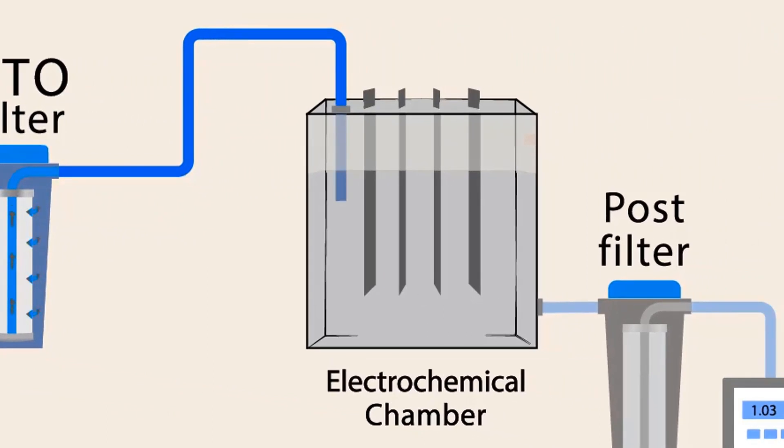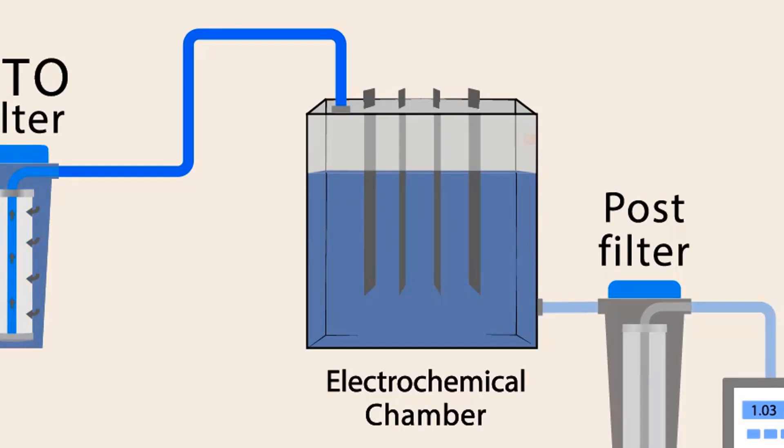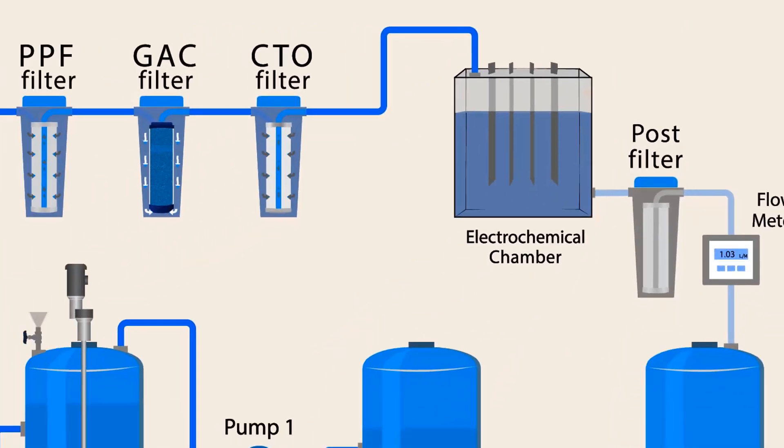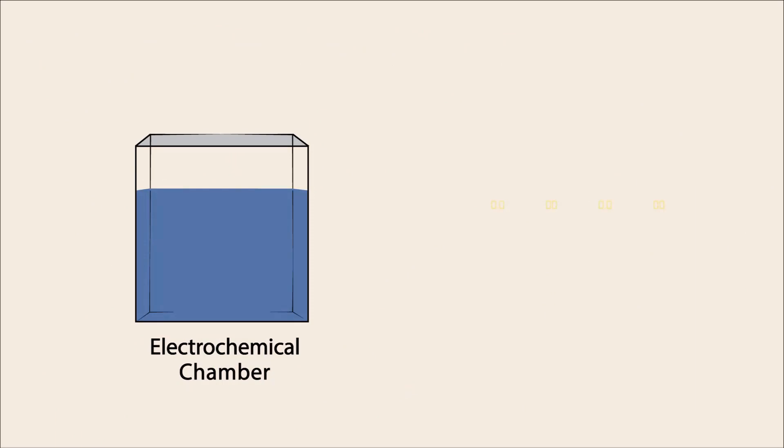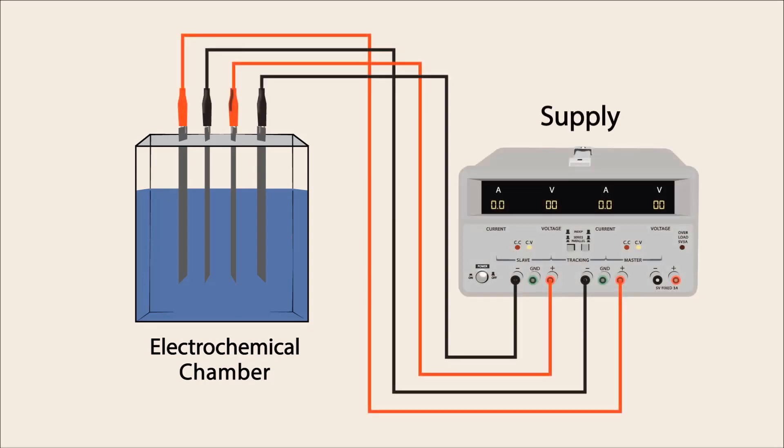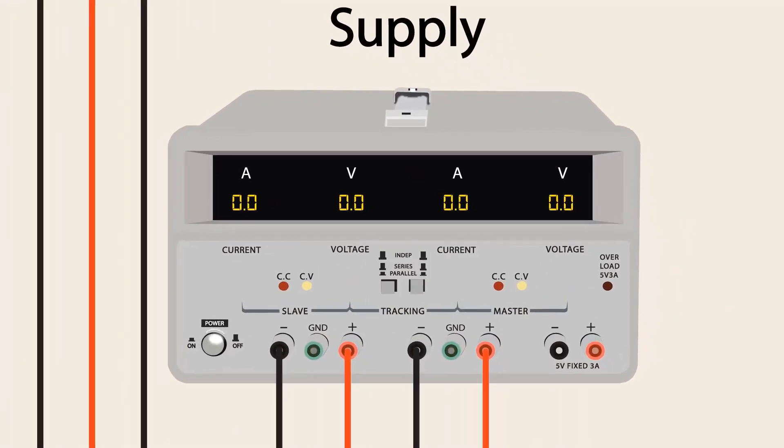Then the water goes to the electrochemical chamber. This stage treats the germs and bacteria. Let's understand this stage separately. This is a water tank. There are electrodes inserted in the tank. These electrodes are connected to the DC power supply.